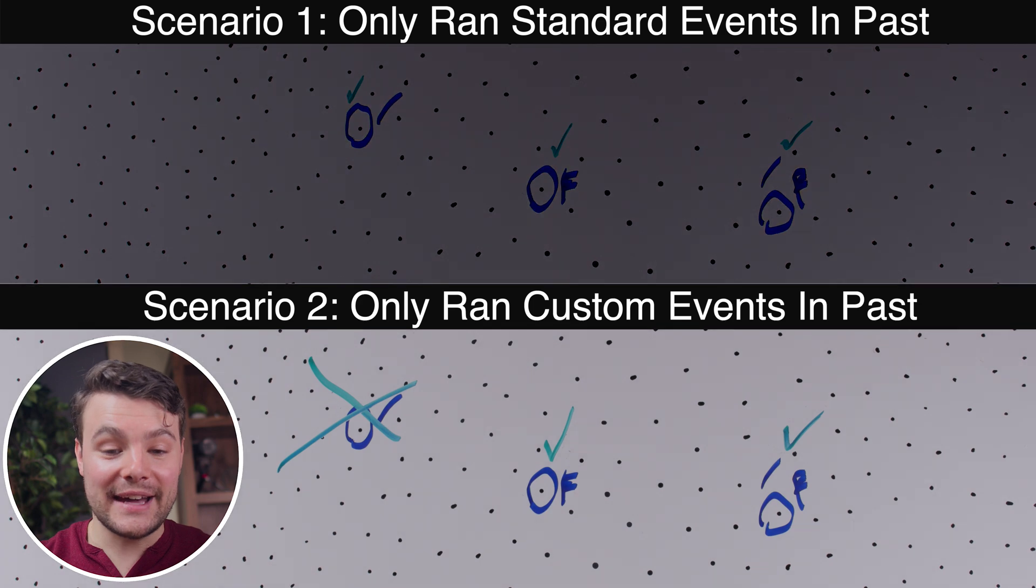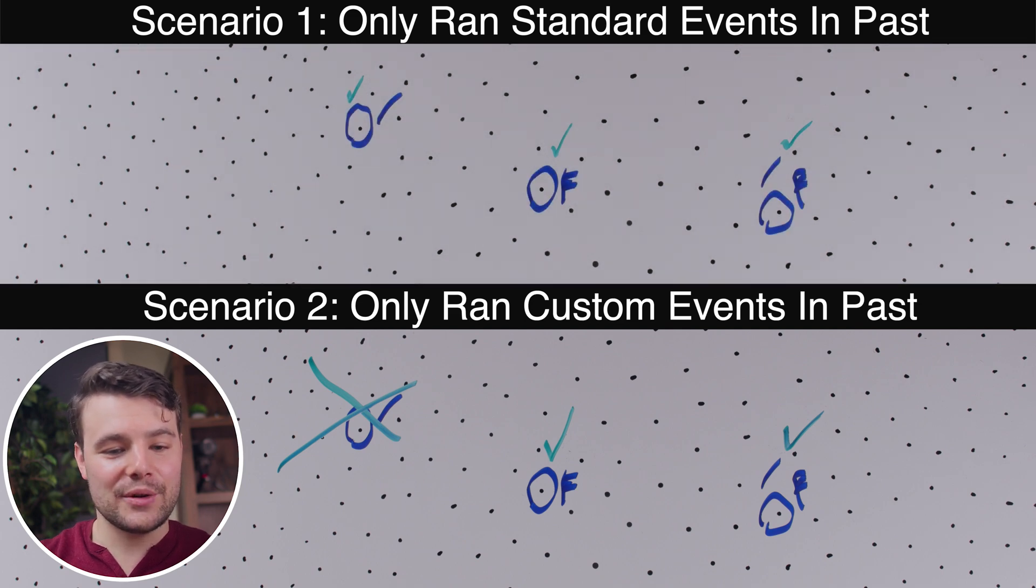Whereas in scenario two, in the past, every decision was centered around trying to get more toothbrush sales. Now in scenario two, it still has good data on general purchases. But in scenario one, it's figured out who's likely to make a purchase. And in scenario two, it's done a better job figuring out who's likely to buy a toothbrush.